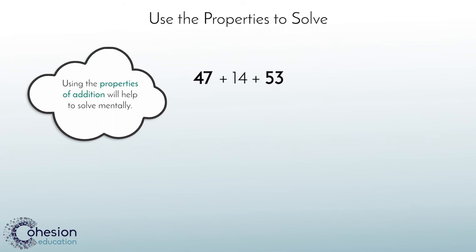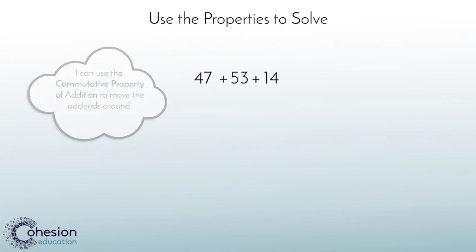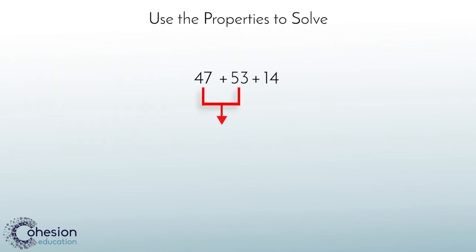Looking at the numbers, you can see that 47 and 53 are not next to one another, but they would be the easiest two to add together mentally, because when we add up their 1's place, it would make a 10. Using the commutative property of addition, we can simply move these numbers around so that 47 and 53 are next to one another. When we add 47 and 53 first, we get 100, and we can add on 14 easily for a sum of 114.